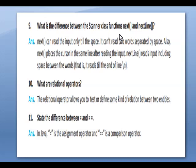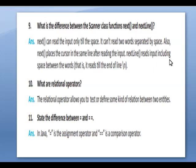What is the difference between scanner class functions next() and nextLine()? To accept a character we use next() and to accept a string we use nextLine(). next() can read input only till the space — it cannot read two words separated by a space. Also, next() places the cursor in the same line after reading input, while nextLine() reads input including the space between the words.